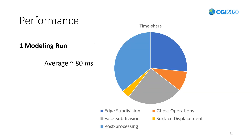This is a breakdown of a modeling run executed asynchronously on the GPU through compute operations. It takes about 80 milliseconds and does not stall the frame rate. The time is quite equally shared between the edge split, the face split, and post-processing, whereas the surface displacement is quite minor. This view of three assembled screenshots illustrates one of our initial goals: varied, heterogeneous terrains.